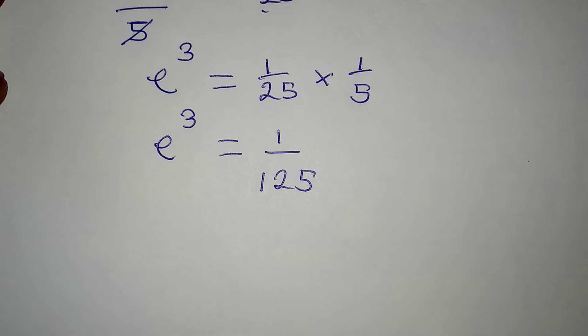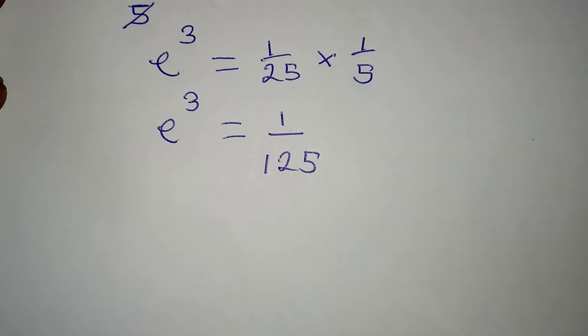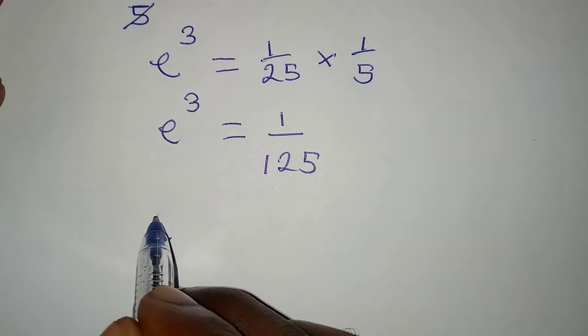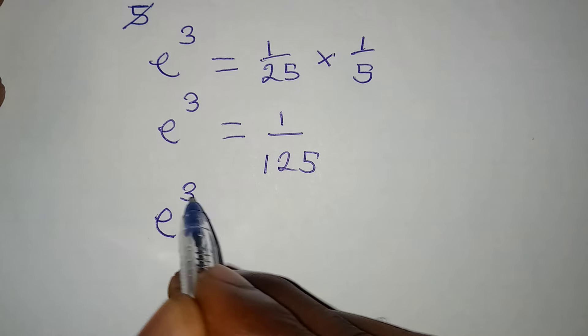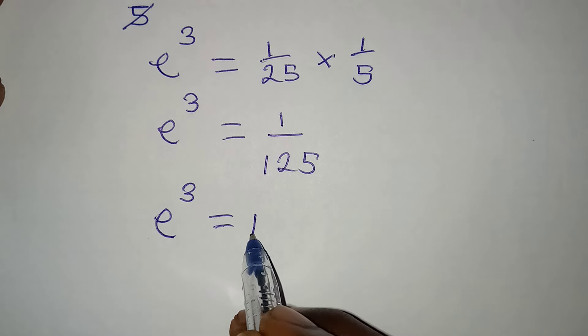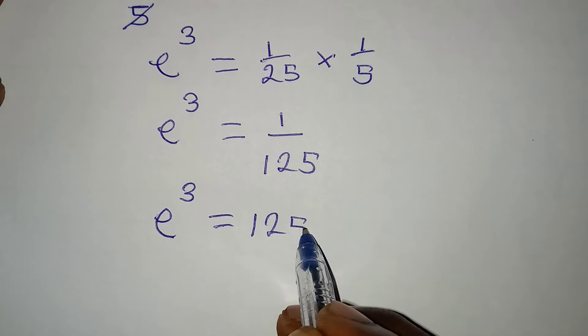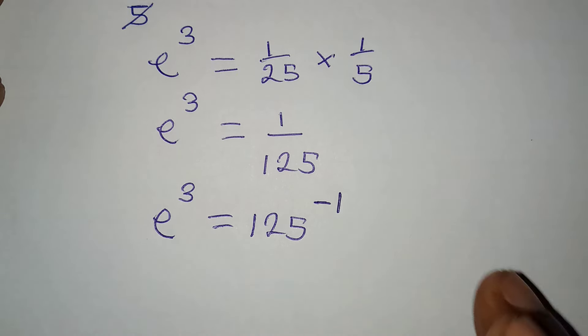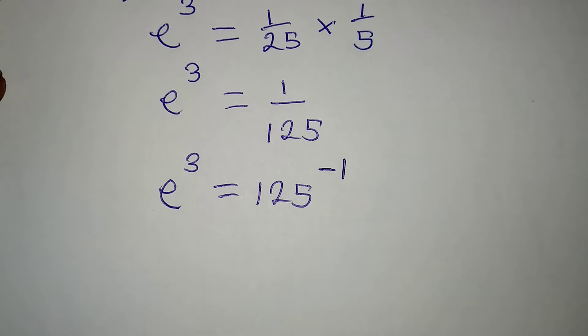Now, what do I do to get the value of e? Remember, our e here to the power of 3 is the same thing as 125 to the power of negative 1. That is to eliminate the fraction here.